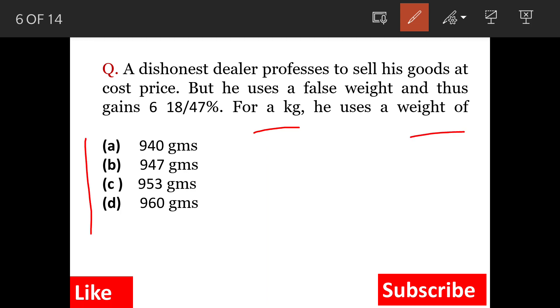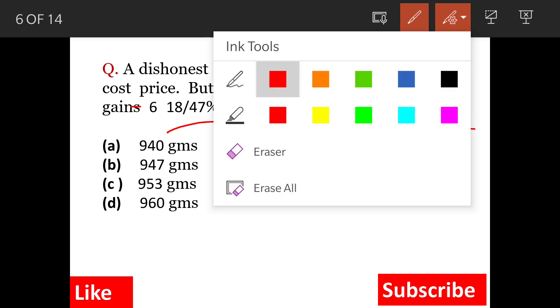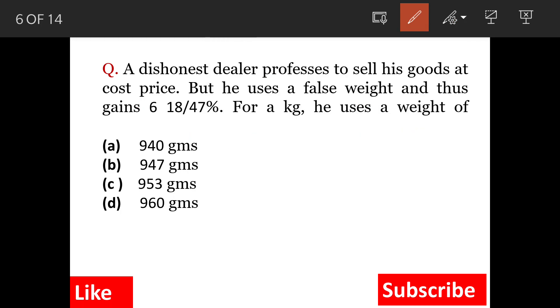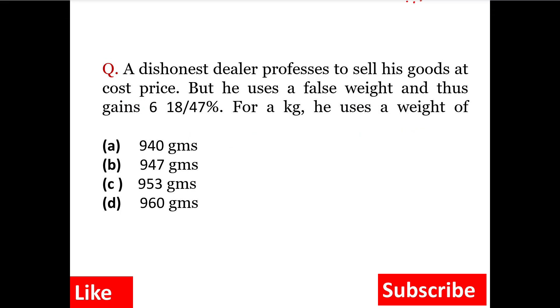Let's understand the question. There is a shopkeeper who is promising that he is selling his goods at the cost he is buying, but in the weight he is doing the manipulation and he has made a profit of 6 18 by 47 percent per kg. So the question is: what weight is he using per kg? Because he is getting a profit, that means he is definitely not selling 1 kg as 1 kg. There is some reduction. So this is the question.